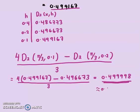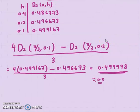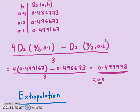Our exact solution is 0.5. We have seen two different combination formulas used. What I have explained is that this combination is called extrapolation. In my next video, I'll explain what extrapolation means and how you can get the solution close to the exact solution. If you have time, just Google it and read about this extrapolation technique. That's all — see you in my next video.